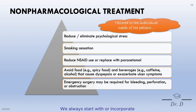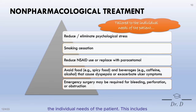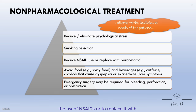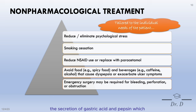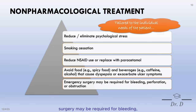We always start with or incorporate non-pharmacological management tailored to the individual needs of the patient. This includes stress reduction, smoking cessation, and limiting the use of NSAIDs or replacing them with paracetamol. Counsel the patient on diet — for instance, to avoid spicy food and beverages like coffee, as caffeine increases the secretion of gastric acid and pepsin. In serious cases, surgery may be required for bleeding, perforation, or obstruction.